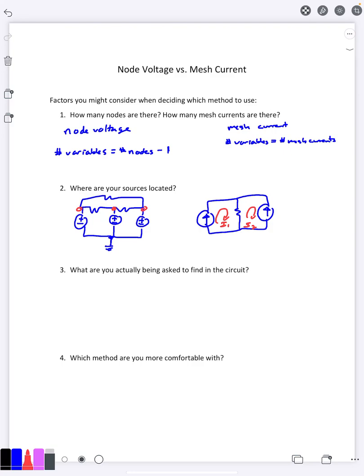However, if you had a current source in between two mesh loops, well then you have to do a super loop. So again, decisions are up to you which one you want to do, but these are things you want to think about when making the decision.